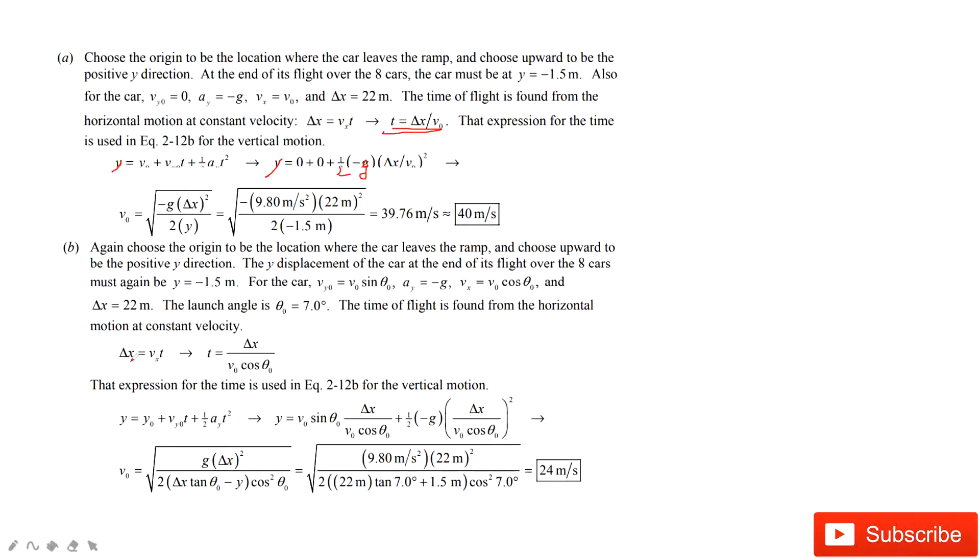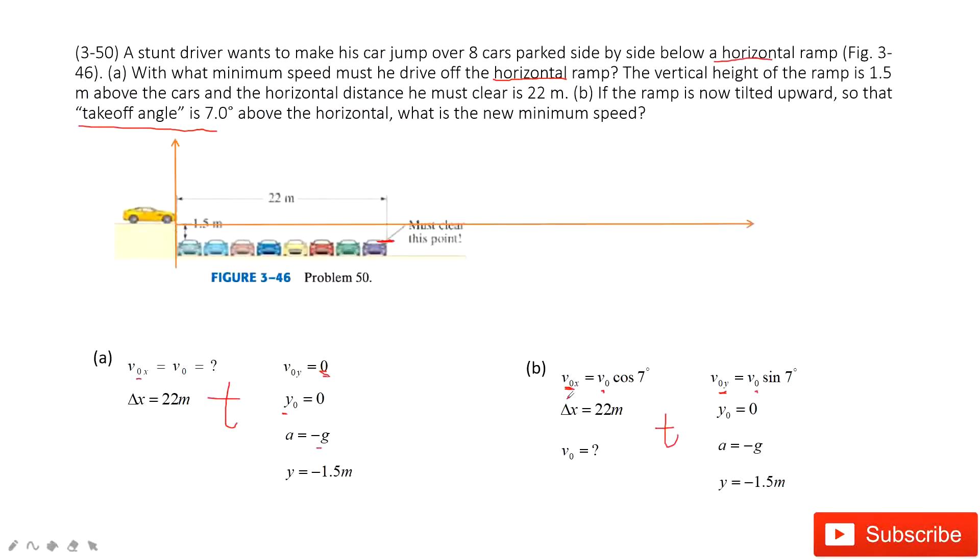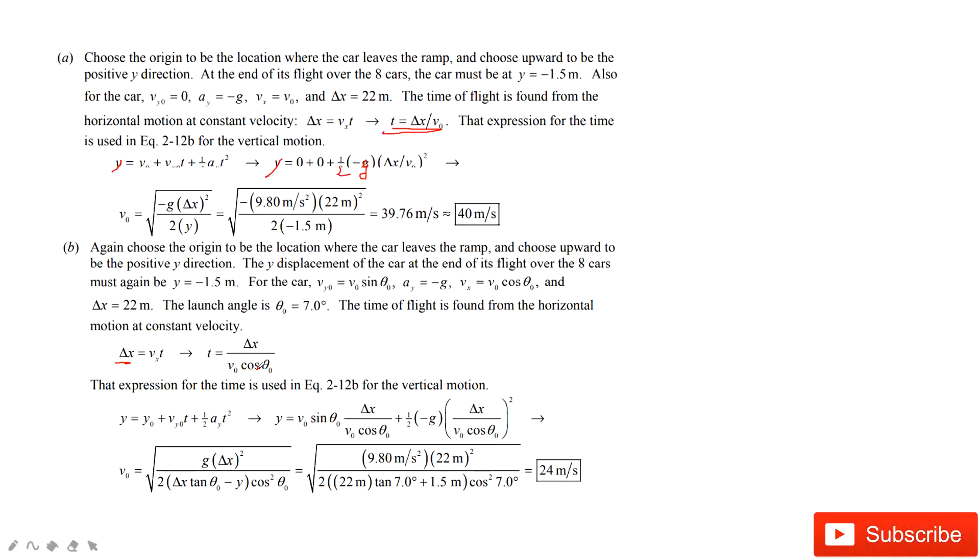The displacement in x component Δx equals the velocity at x component times t. The x component is v₀ cosine θ, which is cosine 7 degrees. We look at the vertical motion. Final position equals initial position plus the initial velocity at y component times t plus one half a t squared. We insert the known quantities. v_y₀ is v₀ sine θ times t.